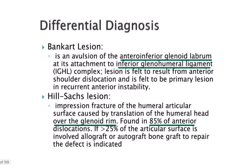The Hill-Sachs lesion is an impression fracture of the humeral articular surface caused by translation of the humeral head over the glenoid rim. It is very important to note that it is an impression fracture of the humeral articular surface, occurring in the upper part of the humeral head.